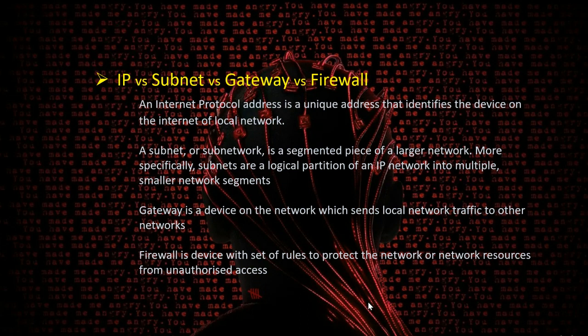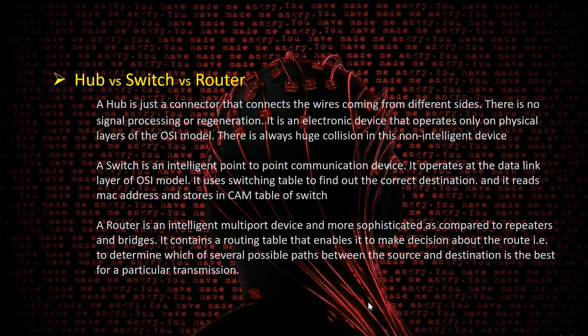A firewall filters traffic based on predefined rules — such as port forwarding, port blocking, or other rule sets defined for a particular network. It is mainly used to restrict unauthorized access and prevent outsiders from attacking the network.